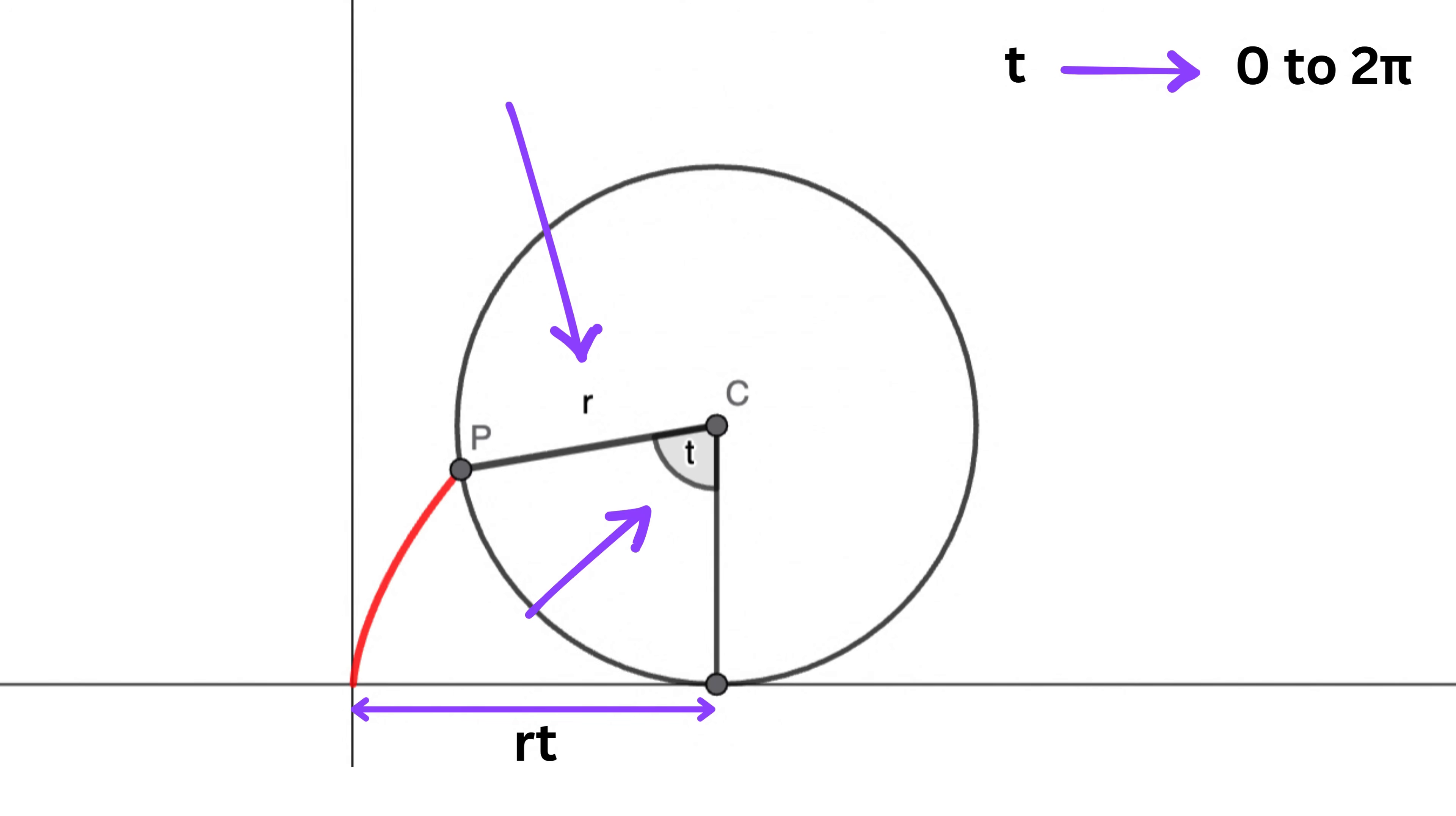Now, since this is R, and this is angle T, so the length of this piece will be equal to R sine T, right?